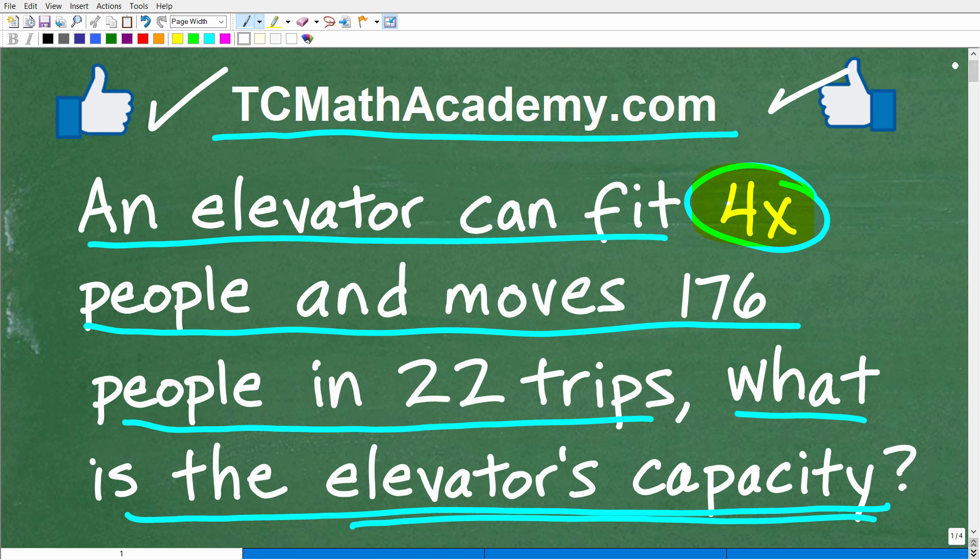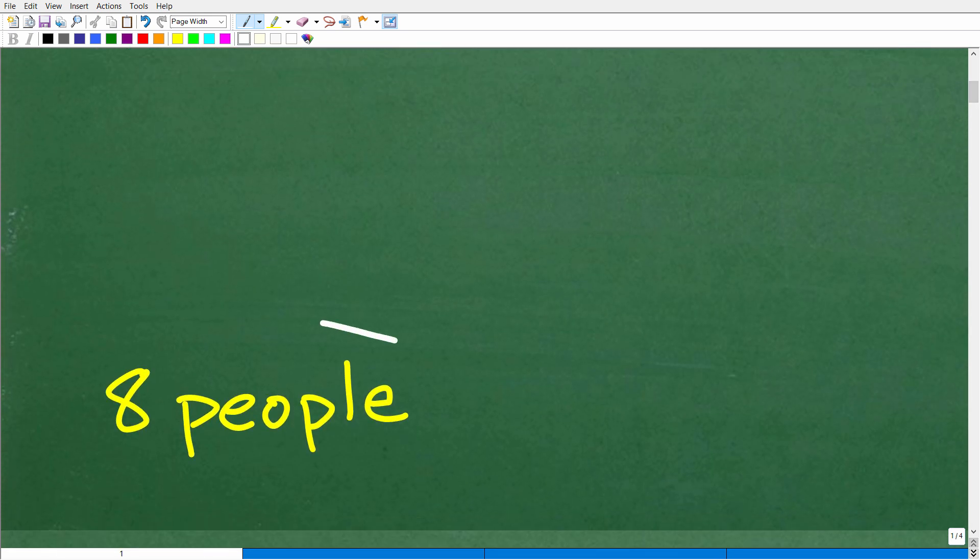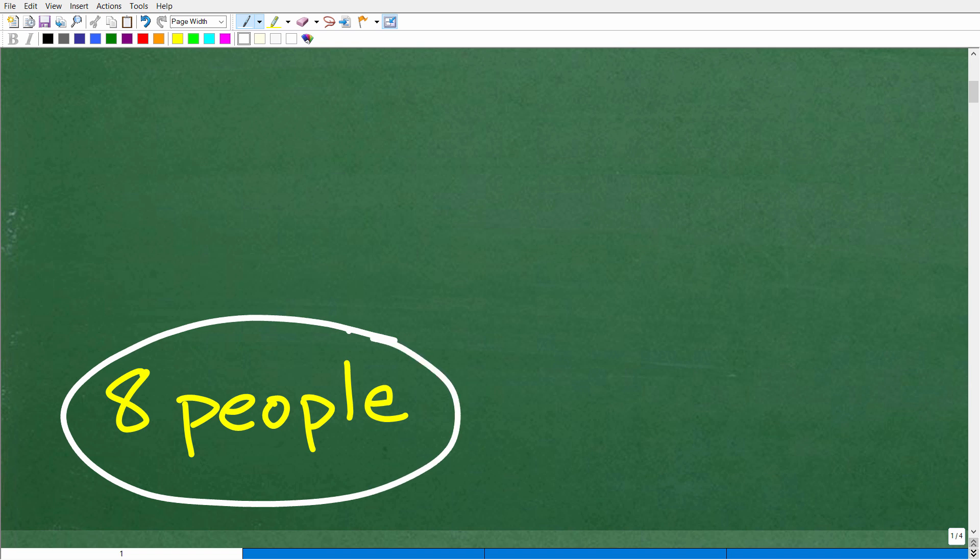So we have this information. What is the elevator's capacity? Well, the correct answer is 8 people. So that is the elevator's capacity. It can fit 8 people at any one time inside, or up to 8 people inside the elevator. So how'd you do?